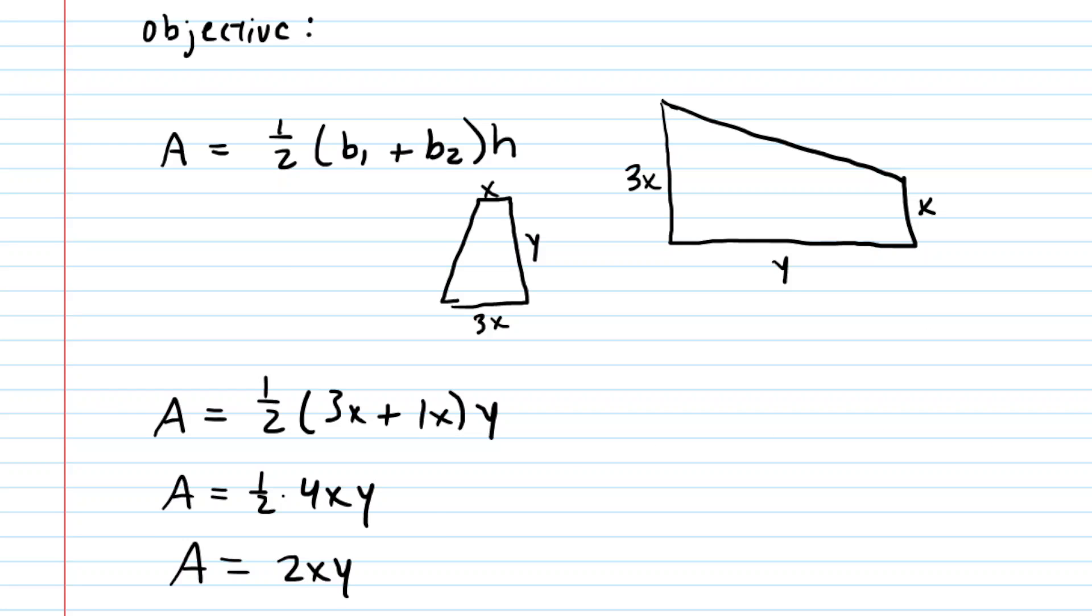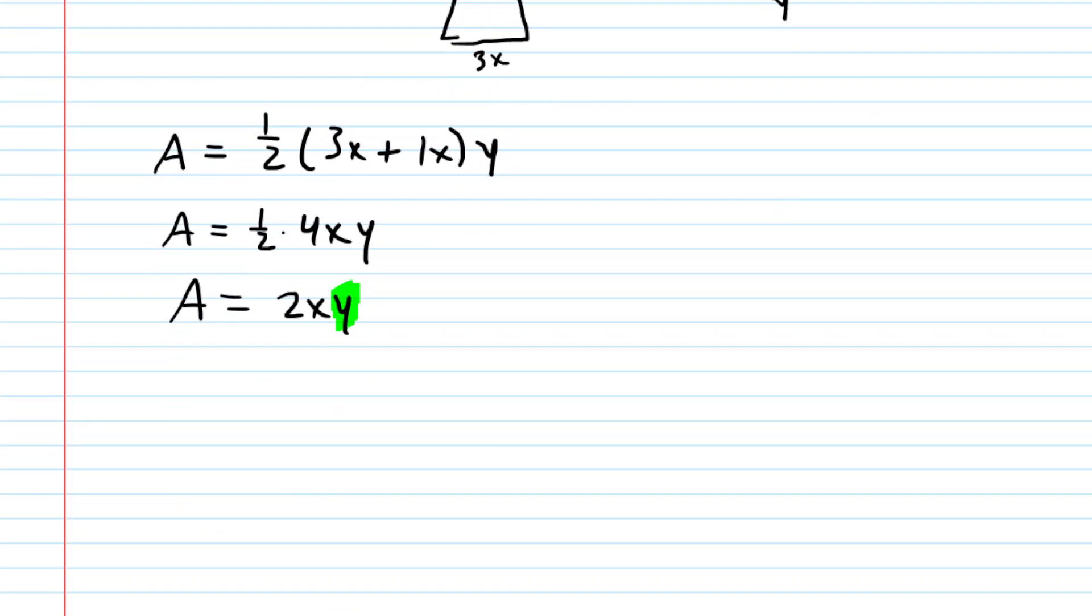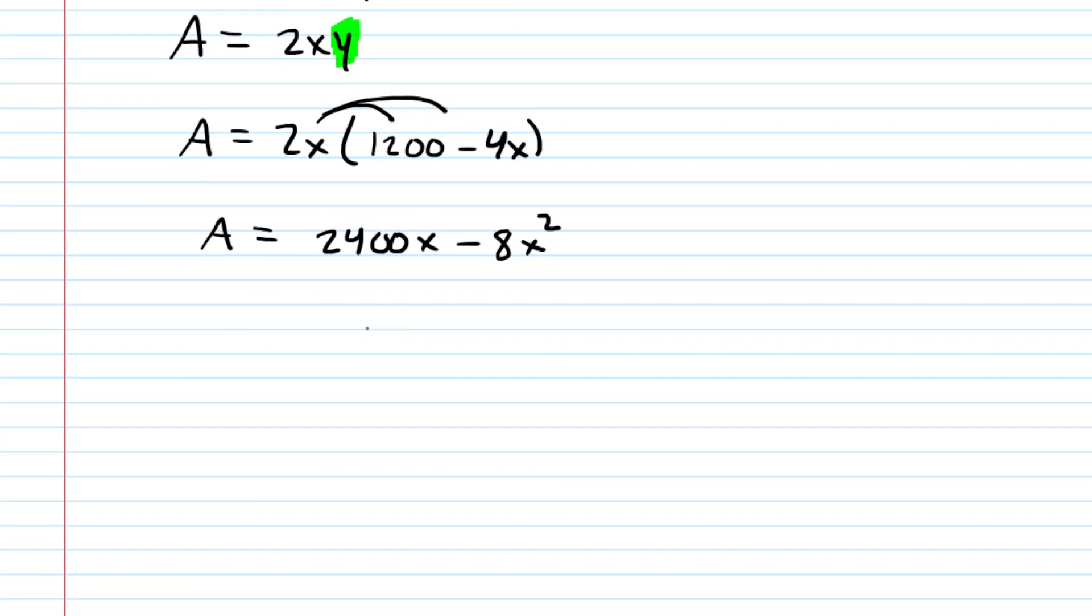So this is our simplified area equation, but you will recall that we had solved for y using our constraint equation. So what we'll do is go back at this stage of the problem, and we will plug in what we had solved for y, which was 1,200 minus 4x. We can then distribute the 2x into the parentheses, and now we have area is equal to 2,400x minus 8x squared. And what's really nice about this area equation is that it's based on just a single variable, and that's what you're looking for. You want your area, or whatever it is you're trying to optimize, to be in terms of just a single variable.